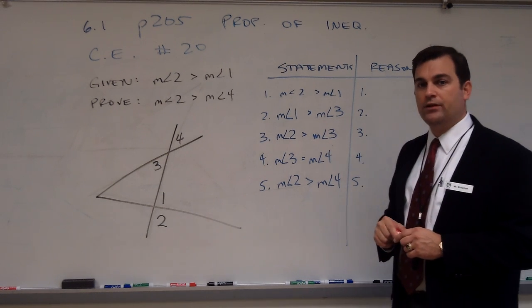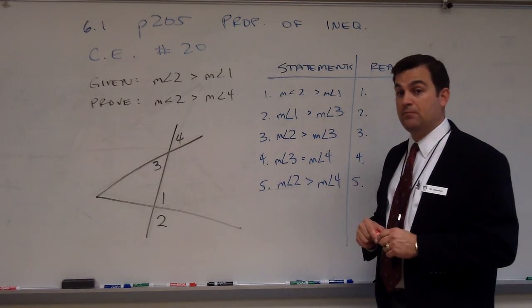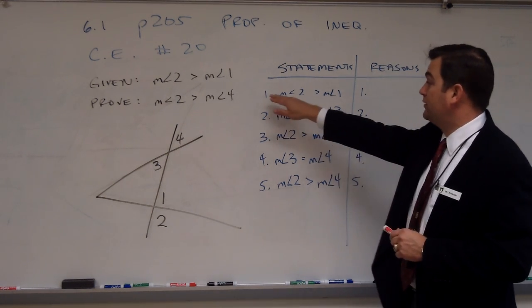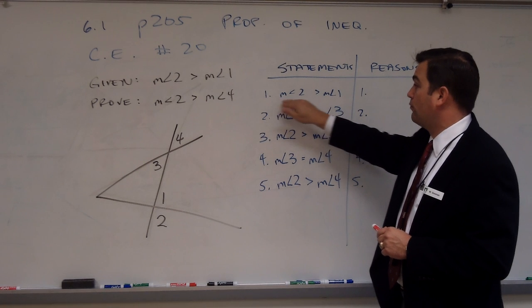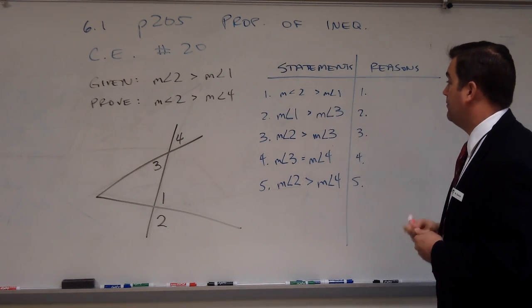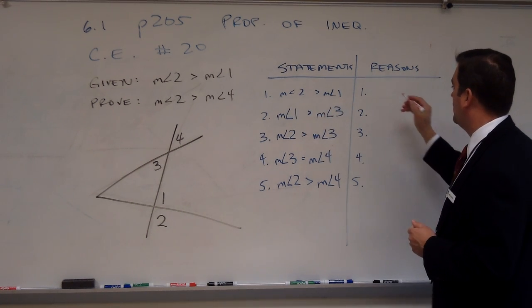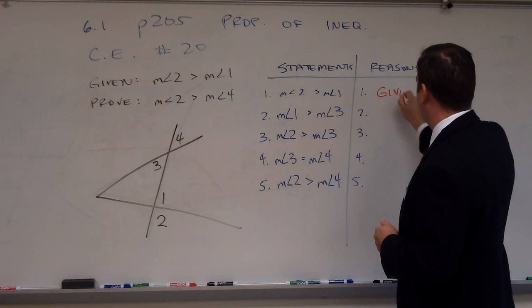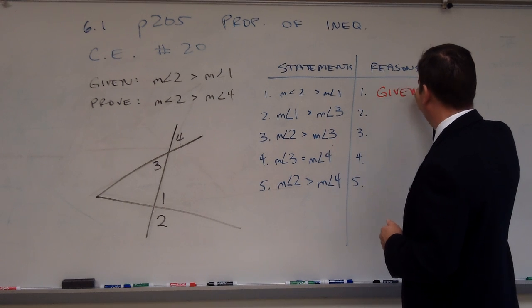Generally, the first thing I'm going to do is state my given, which is what's done in statement number 1. The measure of angle 2 is greater than the measure of angle 1, so my reason for that will be simply that it's given.